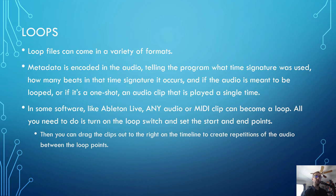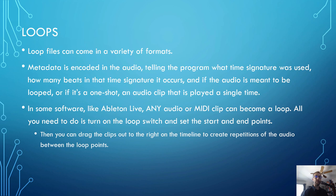Loop files can come in a variety of formats that are generally very specific to the digital program using them. In almost every case, metadata is encoded in the audio file telling the program what time signature was used, how many beats of that time signature occur, and whether the audio is meant to be looped or if it's a one-shot that will just play to the end and stop. In some software — for example, Ableton Live — any audio or MIDI clip can become a loop. All you need to do is turn on the loop switch for the clip and make sure the start and end points land on a beat. Then you can drag the clip out by grabbing the upper right edge on the timeline to create repetitions of the audio between the two loop points.